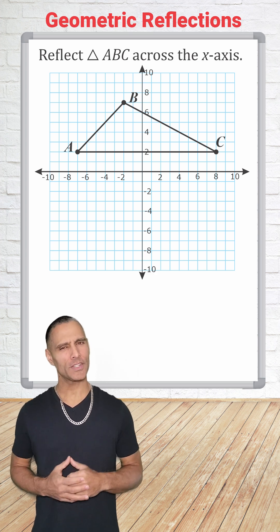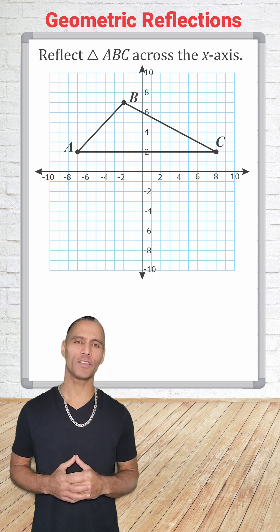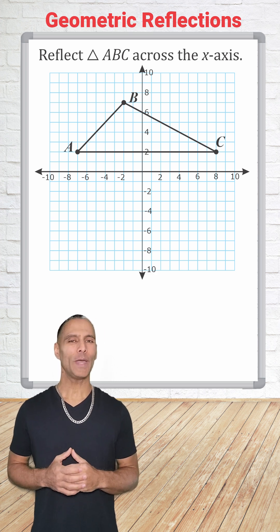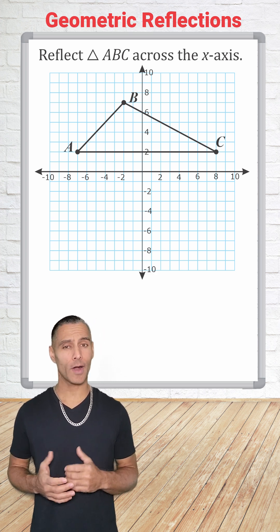When performing reflections, there is a quick and efficient way to determine the new coordinates of each point. First, we identify the current coordinates of our triangle's vertices.